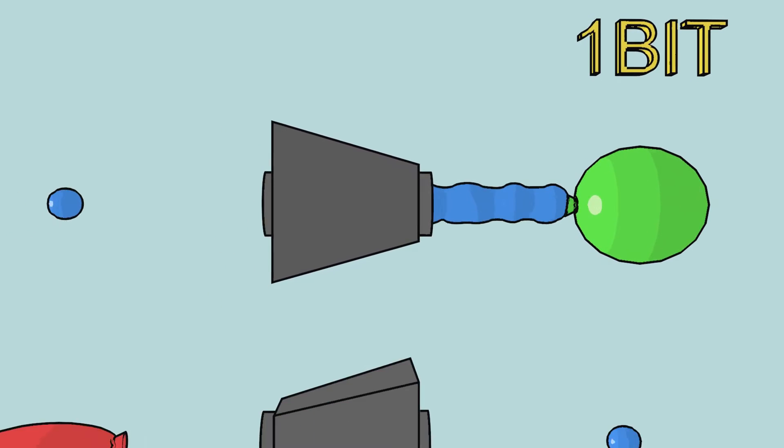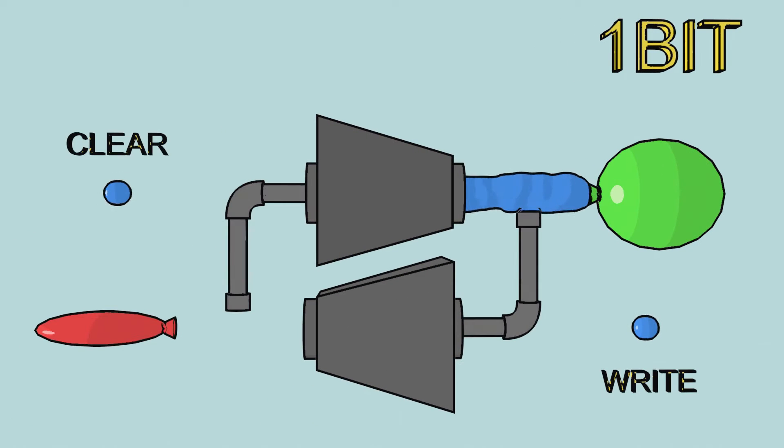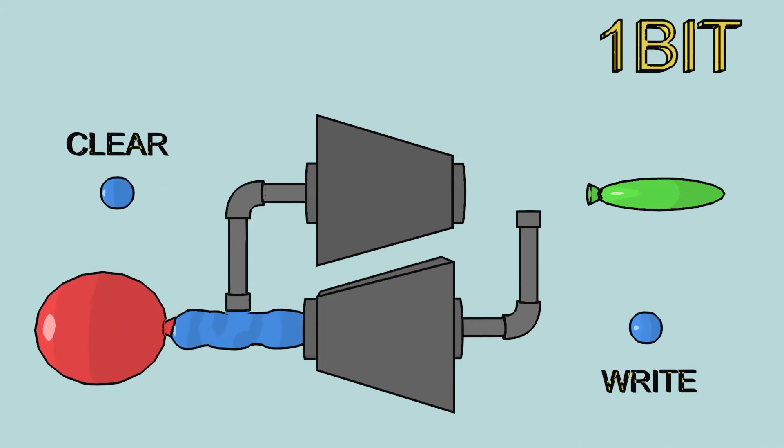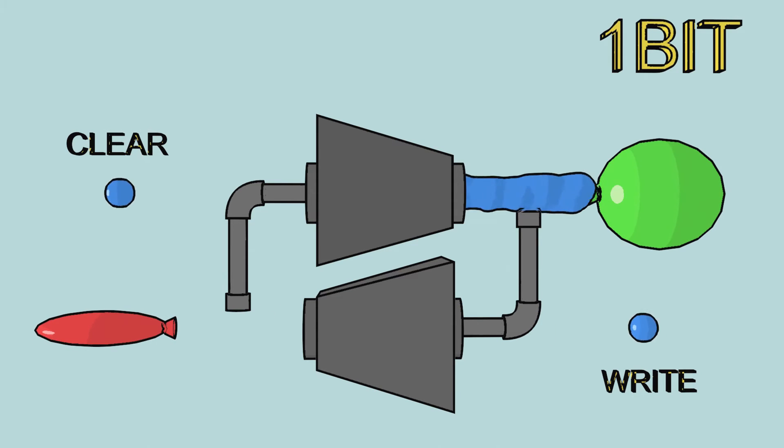Next imagine two NOT gates linked from output to input. You can see how one gate will always be on while the other is off. This is how computer RAM memory holds its information.